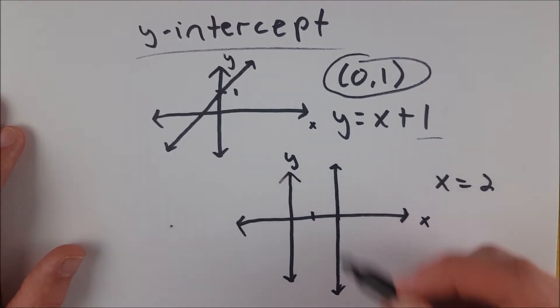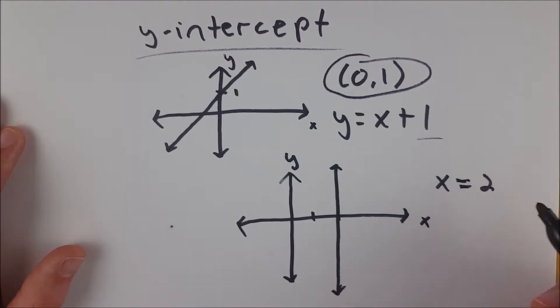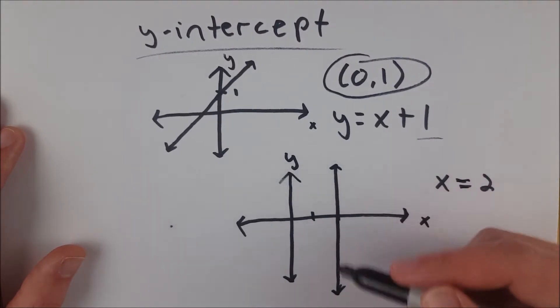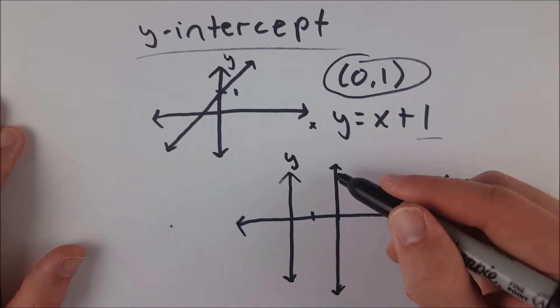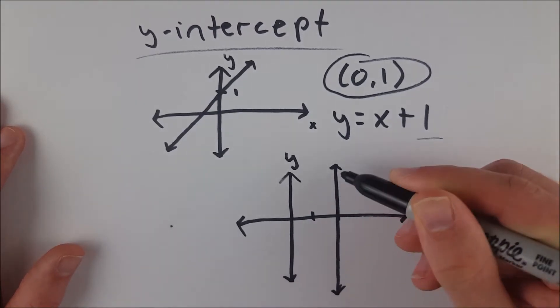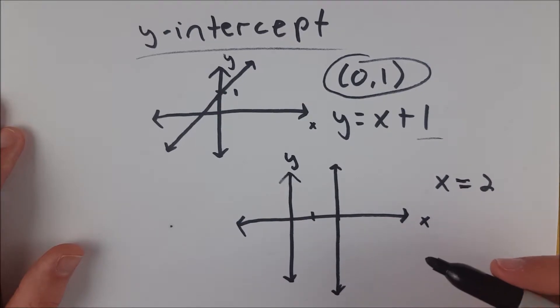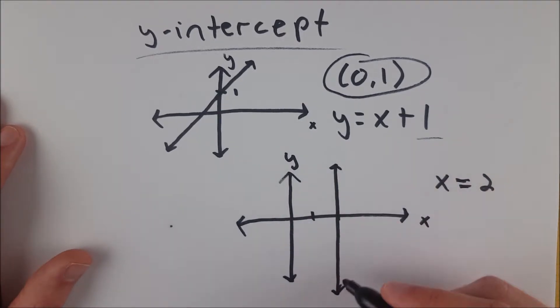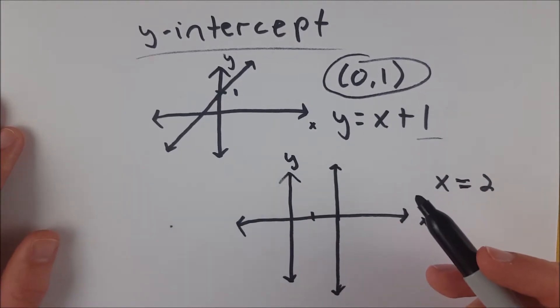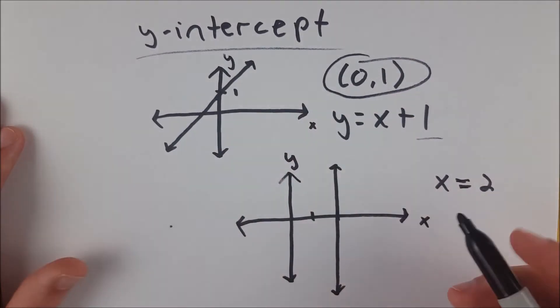Because for any input in its domain, which is just x equals 2, we get more than one output, we get infinite outputs. Because for x equals 2, this line, y could be any value. It covers every single real value of y. So this is not a function. Every linear function has at least one y-intercept.